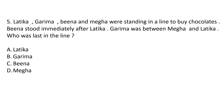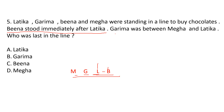Question number 5. Latika, Garima, Beena and Megha were standing in a line to buy chocolates. Beena stood immediately after Latika — that means they are standing together, so this is Beena and this is Latika. Garima was between Megha and Latika. That means this is the sequence. Who was last in the line? Beena is last in this line. So, the answer is Option C.